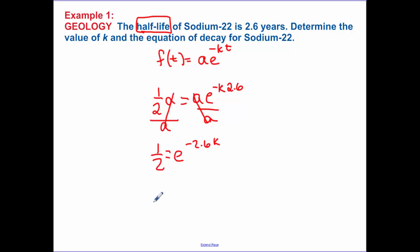So solving for k we do our natural logarithm of 1/2 equals -2.6k, dividing by -2.6 and again using my calculator, 0.267. So that's what my k is. So my equation now, as a function of time, is that.